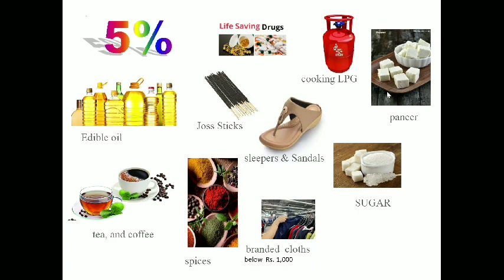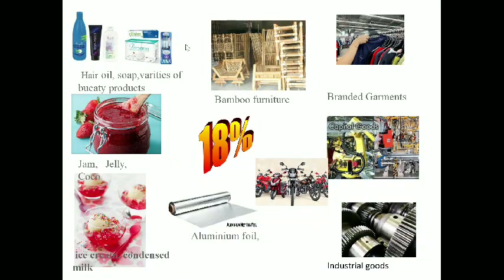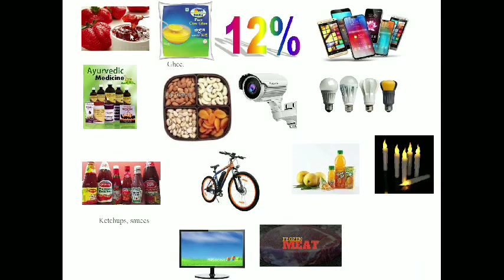The next rate is 12% for goods such as ghee, jam, ayurvedic medicine, dry fruits, CC cameras, ketchup, sauce, bicycle, fruit juice, candles, frozen meat, computer monitors, and electronic phones. The idea behind 12% is that these are components and processors — for example, CCTV and computer monitors are components. Instant food components also fall under 12%.